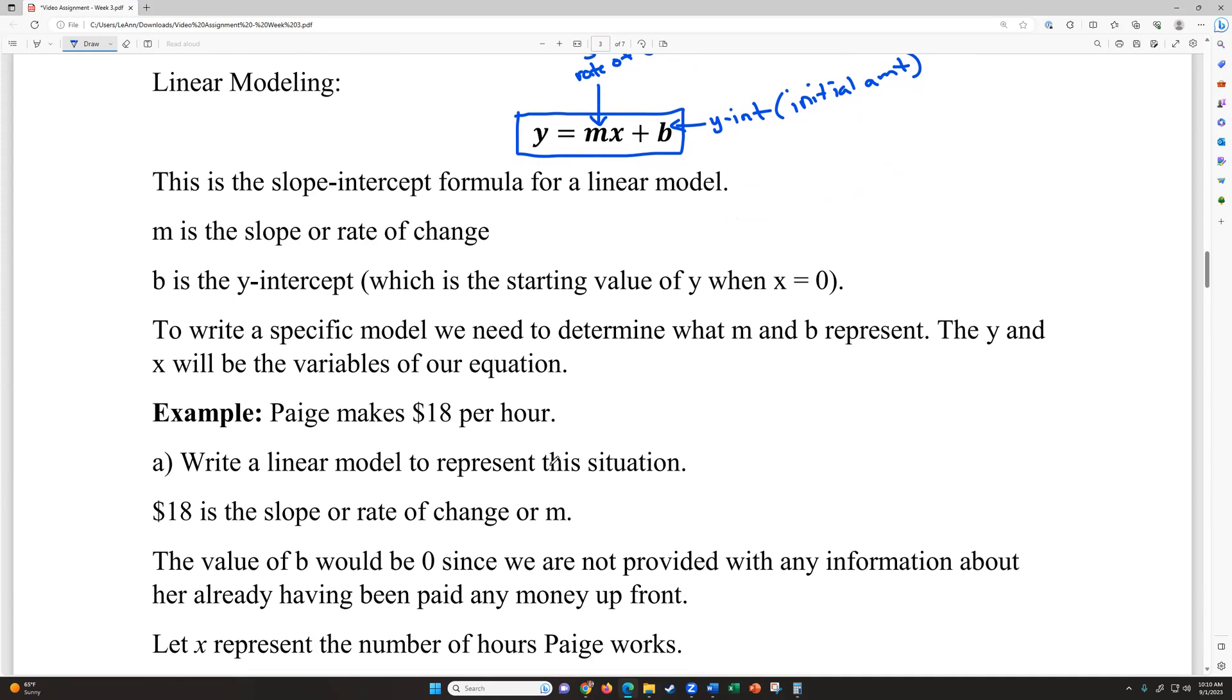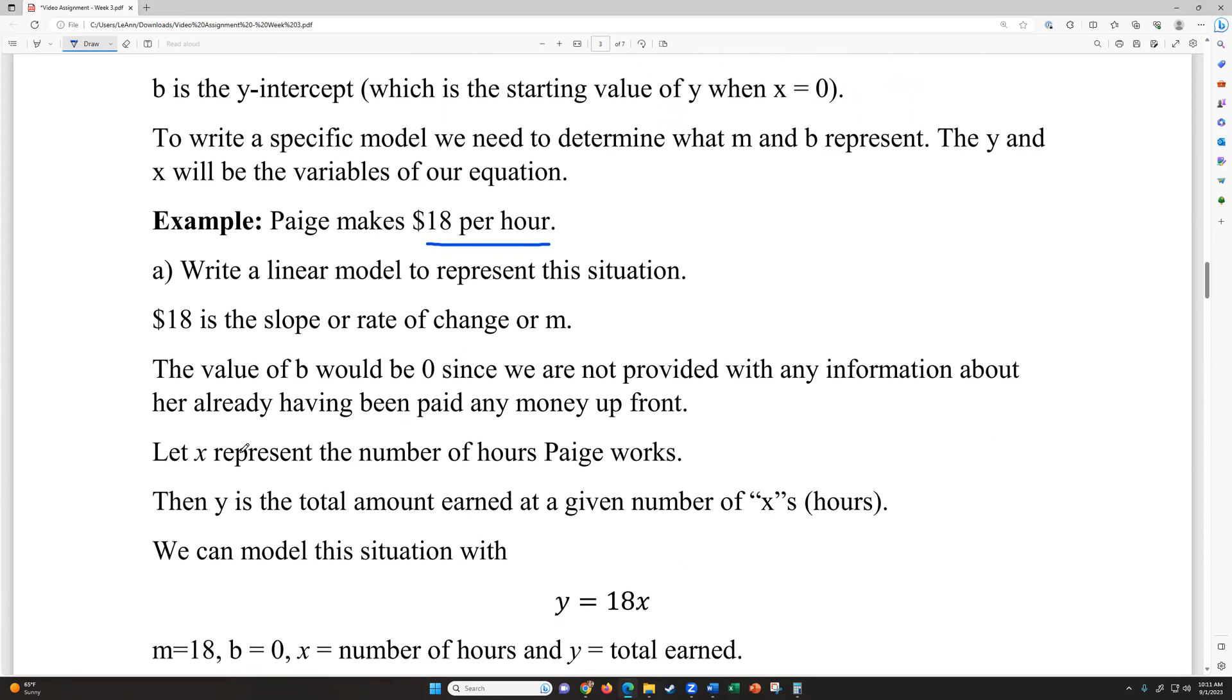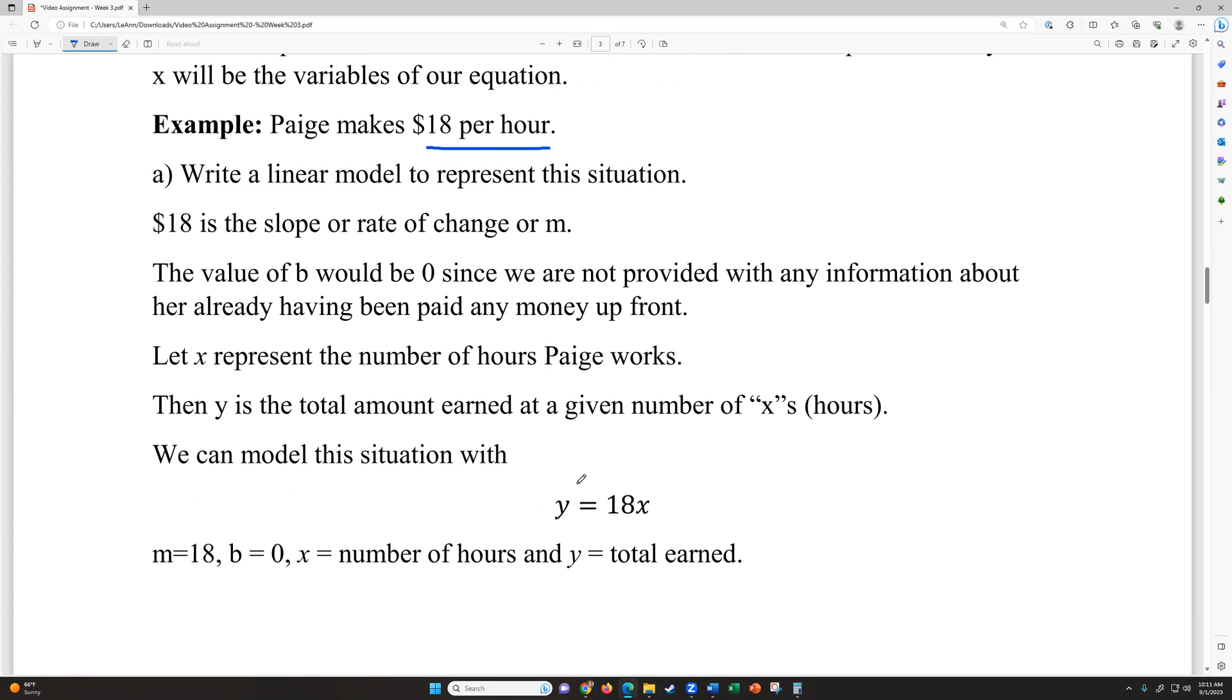So Paige makes $18 per hour. Write a linear model to represent the situation. So since it's 18 per hour, that's the slope or the rate of change. She doesn't have any money. It never tells us she had any money to begin with. So she's starting out fresh. So her b value would be zero since we're not provided with any information about her already having been paid any money up front or having any money like in a savings account. So we're going to let x represent the number of hours she works because she gets paid per hour. Then y will be the total amount that she earns at the given number of x hours. So her like if we're doing it for a whole week, that would be her total paycheck for the week. We can model this situation with y equals 18x. And you could write plus zero there, but we don't usually write plus zero. But that would be the m and the b. And notice the x and the y are just variables.